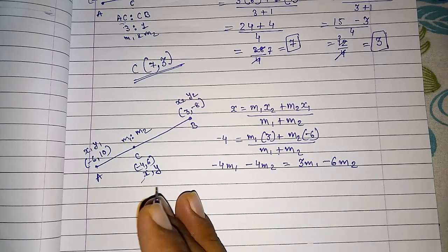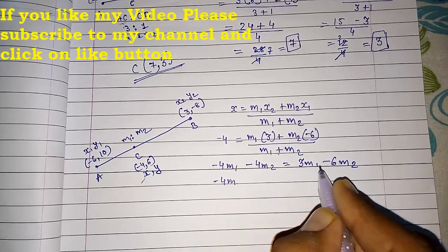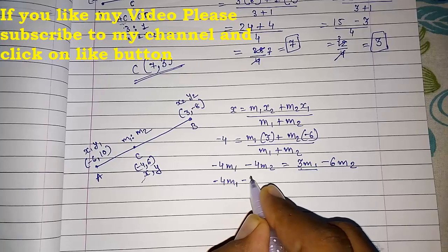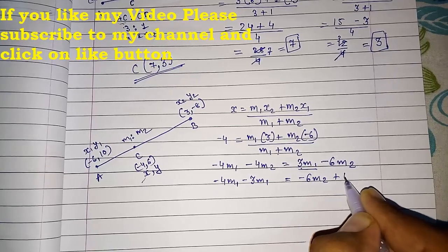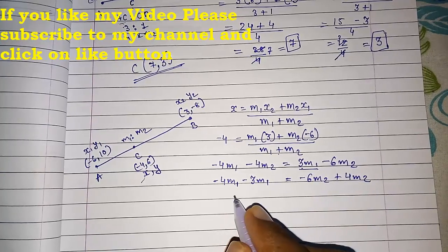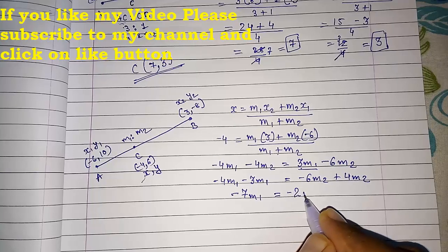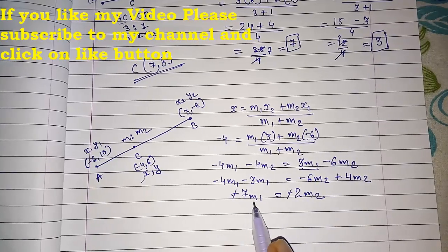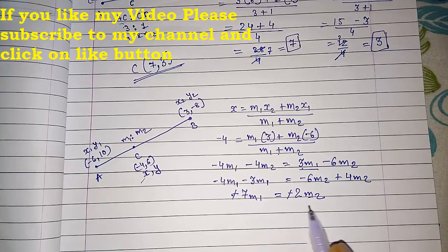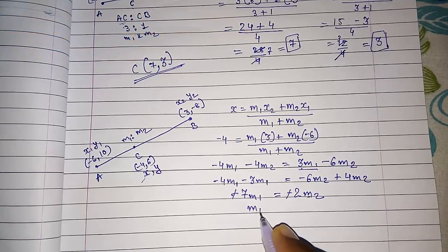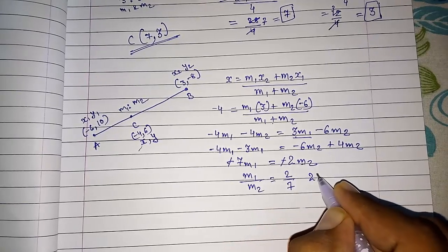Now this M1 plus M2 will go here. So it will be minus 4 M1 plus minus 4 M2 equals M1 times 3 plus M2 times minus 6. This minus 4 M1 minus 3 M1 and this was minus 6 M2 plus 4 M2. So you will get minus 7 M1 equals minus 2 M2. Now we want the ratio M1 by M2. So I will take this M2 here in the denominator and this 7 here in the denominator. So my ratio will be M1 by M2 equals 2 by 7. So the ratio is 2 is to 7.